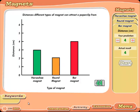So now we know that if we draw a bar chart for our results, the distance, the types of magnet, we will find out that the bar magnet can attract the paper clips from the longest distance. The bar magnet is the strongest magnet. And our conclusion is the longer the distance of attraction, the stronger the magnet.